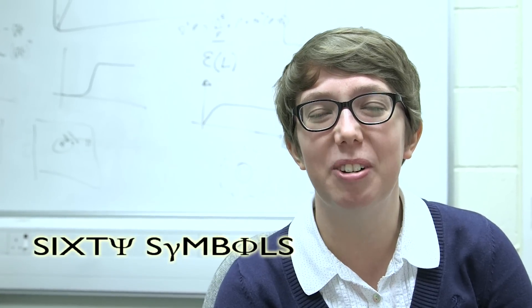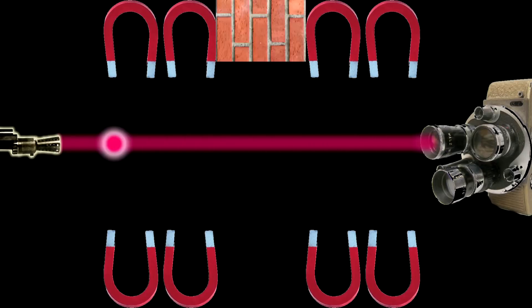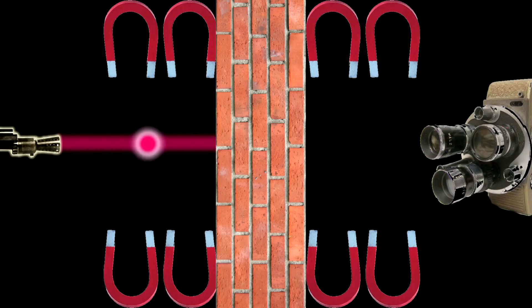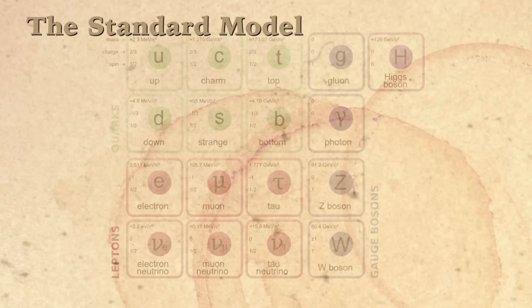We're going to talk about some freaky stuff — shining light through walls. There's a new type of particle that you can introduce to the Standard Model, and you introduce it because it solves some problems that exist in the interactions that make protons and neutrons — the strong interactions.